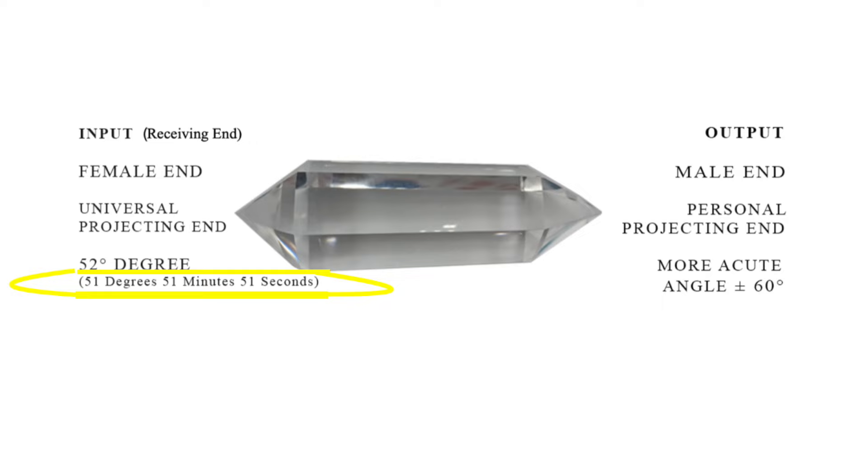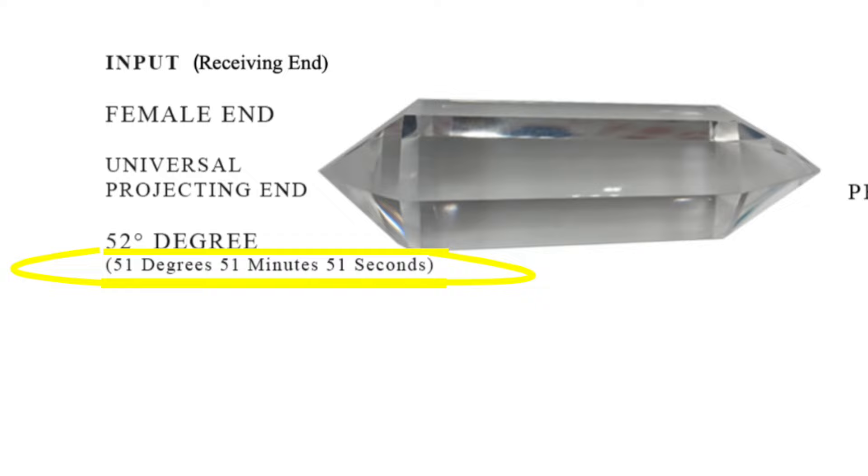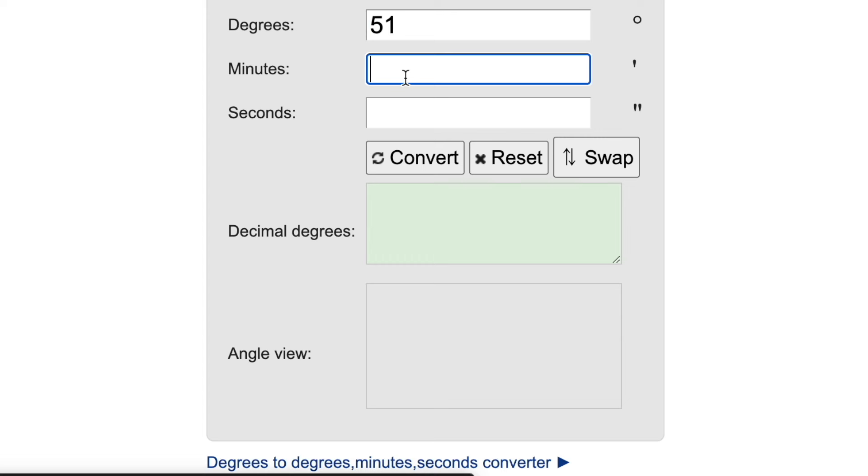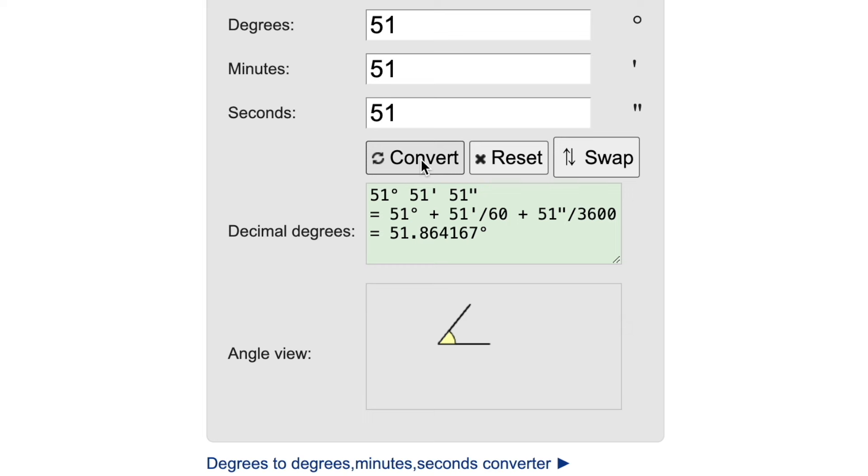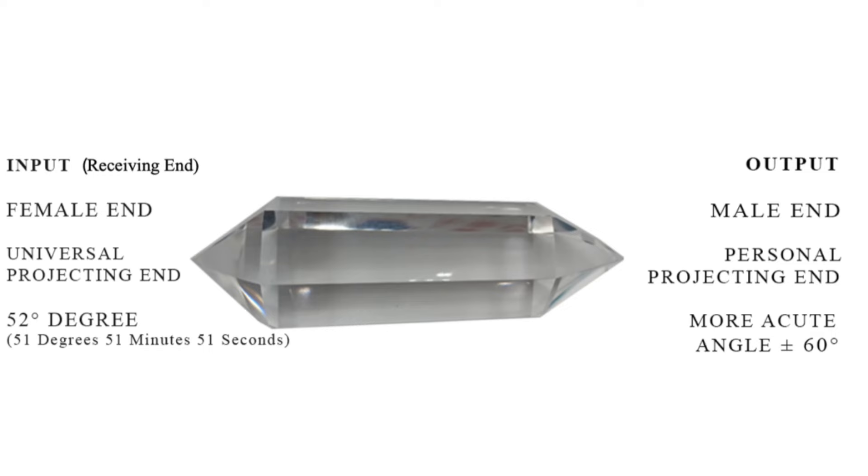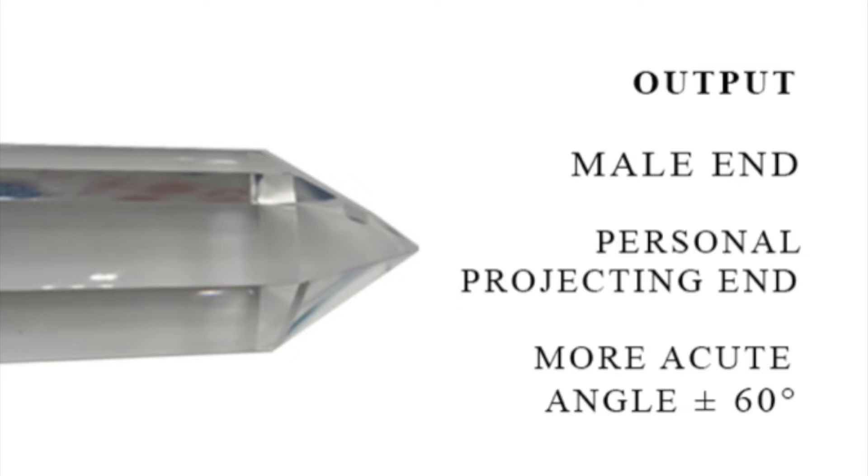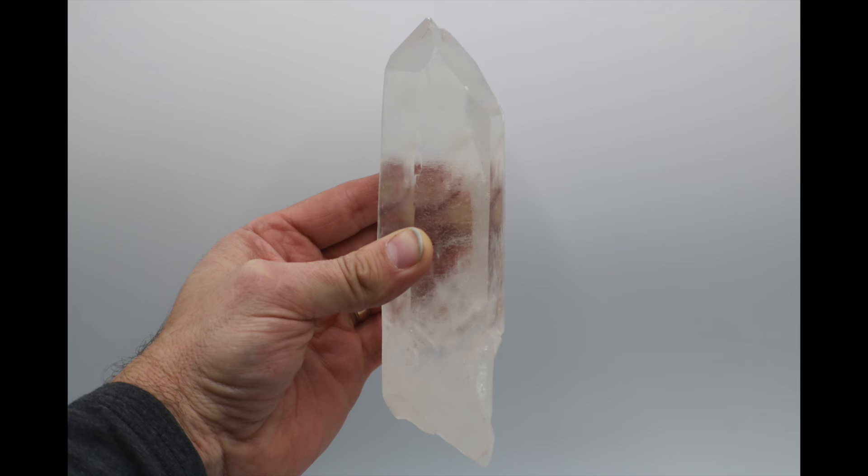There's often confusion over the angle of the Vogel cut crystal, as Marcel talked about the receiving end being 51 degrees, 51 minutes, 51 seconds. When you plug those numbers in and calculate the angle, you get 51.86 degrees, which rounds up to 52 degrees. Number five, the firing tip, or output end, often referred to as the male end, needs to have a more acute internal angle than the receptive end. The ideal angle for this is 60 degrees. Number six, the crystal must be cut on the c-axis or the growth axis of the crystal.